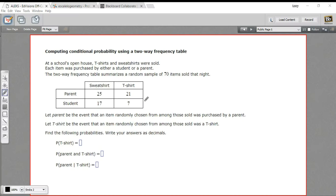In this problem, we have some data given to us in the form of a two-way frequency table. That's where they break down the data into a couple of sets of categories.